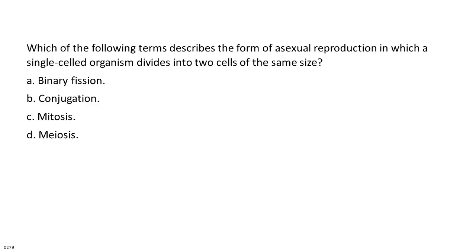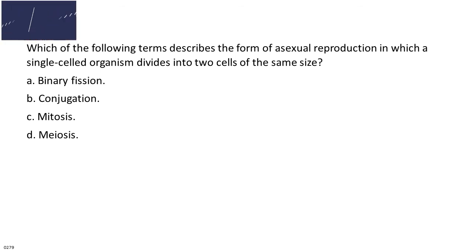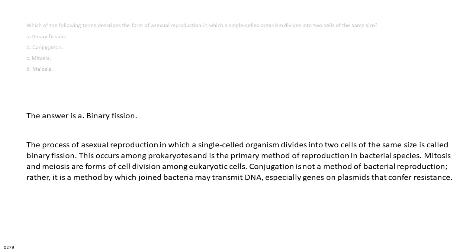Which of the following terms describes the form of asexual reproduction in which a single-celled organism divides into two cells of the same size? A. Binary fission. B. Conjugation. C. Mitosis. D. Meiosis. The answer is A. Binary fission. The process of asexual reproduction in which a single-celled organism divides into two cells of the same size is called binary fission. This occurs among prokaryotes and is the primary method of reproduction in bacterial species. Mitosis and meiosis are forms of cell division among eukaryotic cells. Conjugation is not a method of bacterial reproduction; rather, it is a method by which joined bacteria may transmit DNA, especially genes on plasmids that confer resistance.